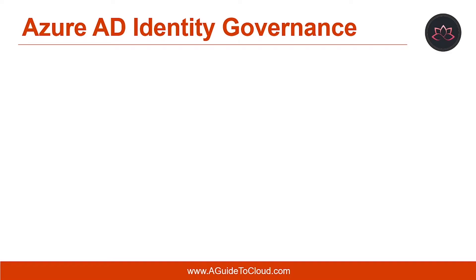Specifically, it is intended to help organizations address four key questions: Which user should have access to which resources? What are those users doing with that access? Are there effective organizational controls for managing access? And can auditors verify that the controls are working?